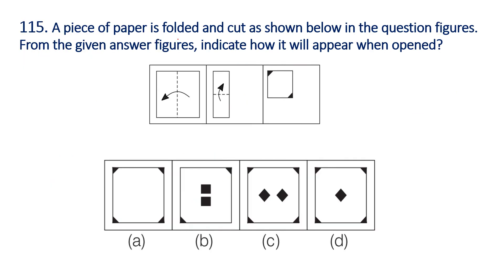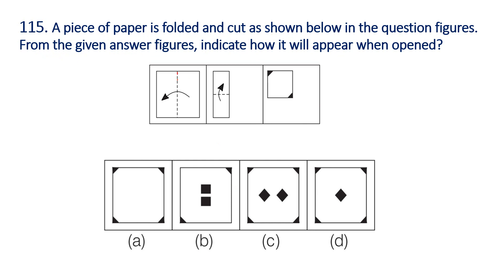Question 115: A piece of paper is folded and cut as shown below in the question figures. From the given answer figures, indicate how it will appear when opened. We need to fold the first side, then fold the other side the same way, cut the same way, then unfold and reverse. Cutting the same way, then cut again. So this is the answer.